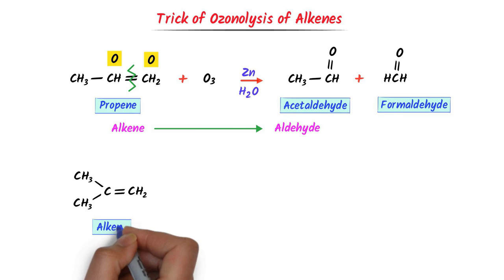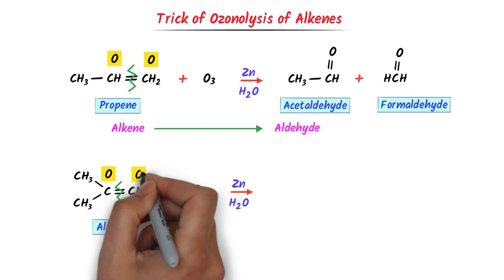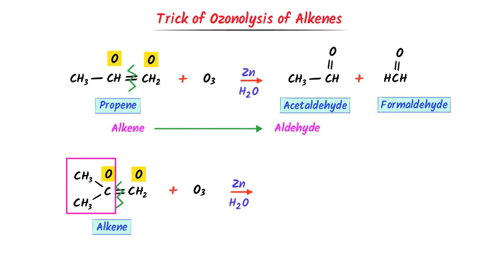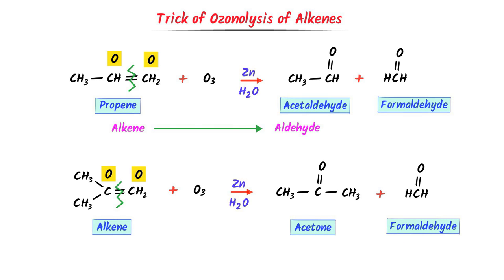Now consider this alkene. In the first step I add O3, and in the second step I add zinc plus water. According to the trick, I spot the double bond and break the alkene at the double bond. I write oxygen above each carbon on both sides. One compound is CH3 single bond C with oxygen double bonded to that carbon, single bond CH3 — this is acetone. Plus HCH with oxygen double bonded — this is formaldehyde. Thus using ozone, we break this alkene into acetone plus formaldehyde.